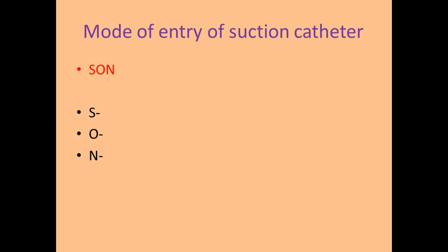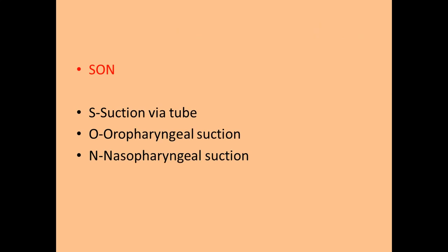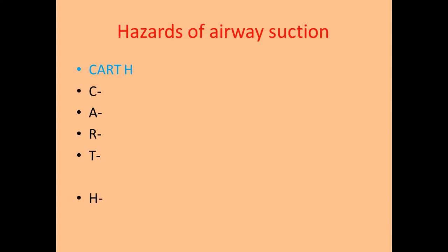Let's see the next one: modes of entry of suction catheter. The mnemonic is SUN. S stands for suction via tube — it can be endotracheal tube or tracheostomy tube. O stands for oropharyngeal suction, which may be through the oropharyngeal airway or the mouth. N stands for nasopharyngeal suction. Very easy to remember.